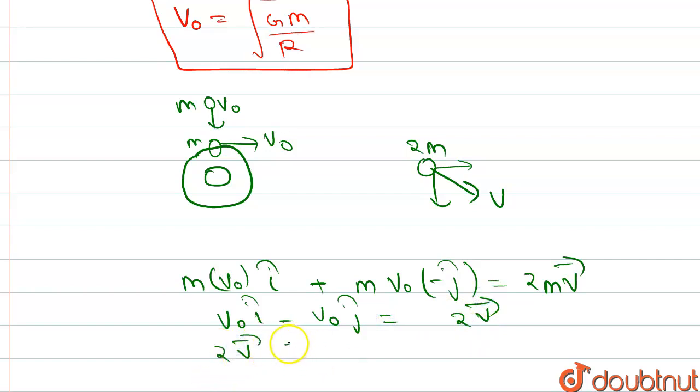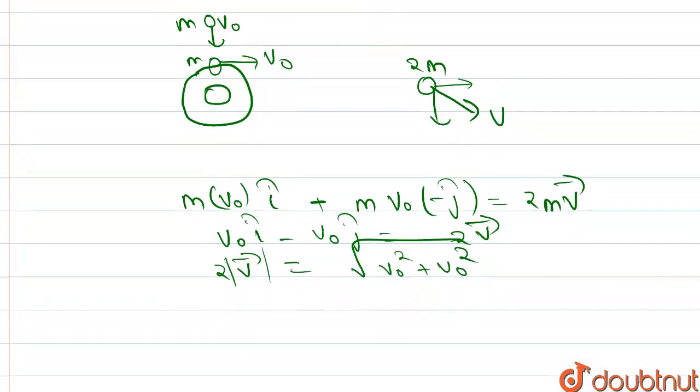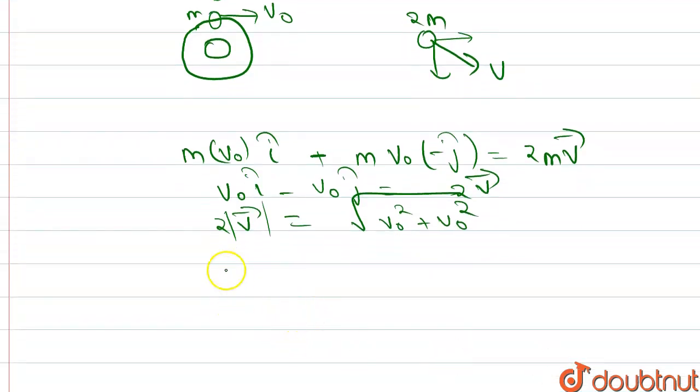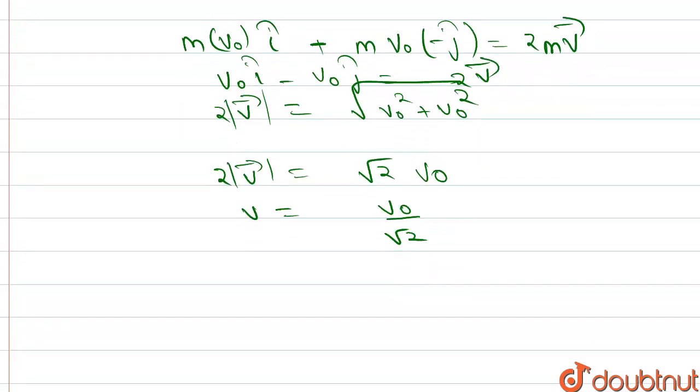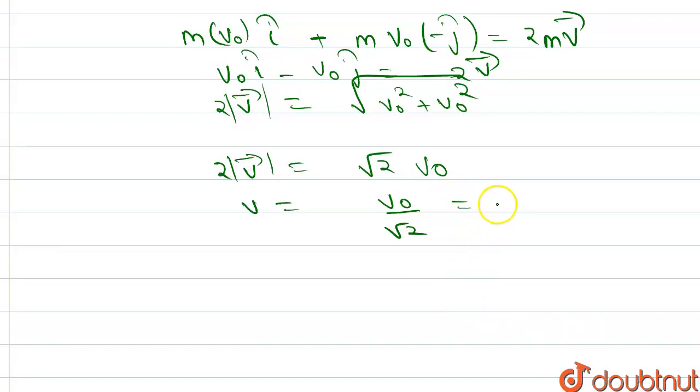Then if we find the magnitude of 2m v⃗, it equals √(v₀² + v₀²). So 2m v = √2 m v₀, then v = v₀/√2, which is about 0.707 v₀.